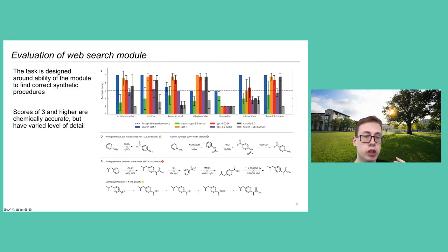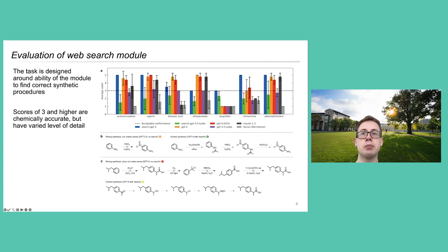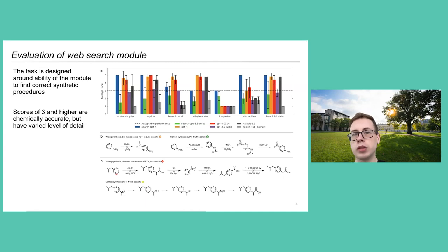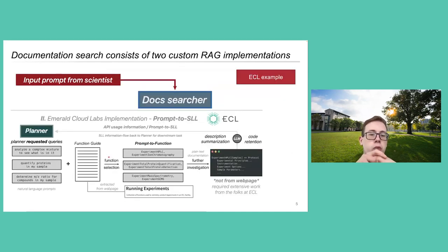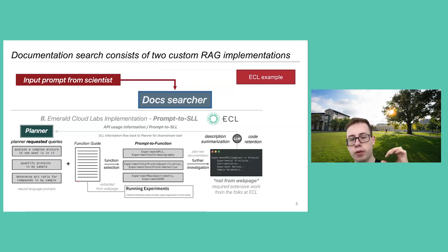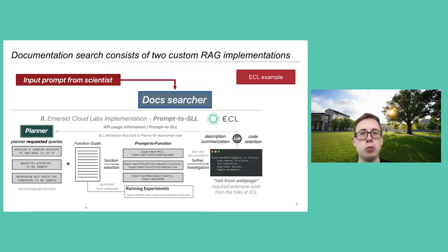In this paper we evaluate everything module by module. We start with the evaluation of the web search module with a set of seven compounds, asking various models — including models augmented with web search — to provide synthesis routes. GPT-4 alone completely hallucinates the synthesis, which is one of the main problems with language models. But when you provide internet access, you get correct, if less detailed, synthesis routes. For documentation search, we have two custom RAG implementations.